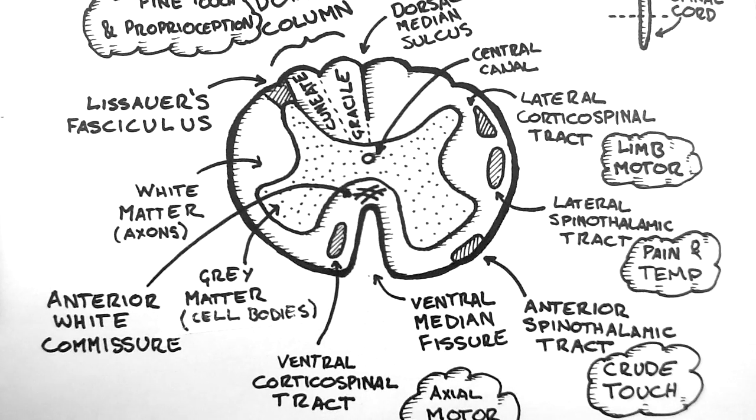So that's an overview of the spinal cord anatomy. In the next tutorial, we will discuss the dorsal column medial lemniscus pathway in more detail.